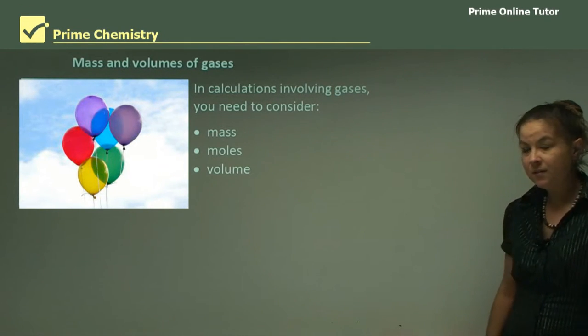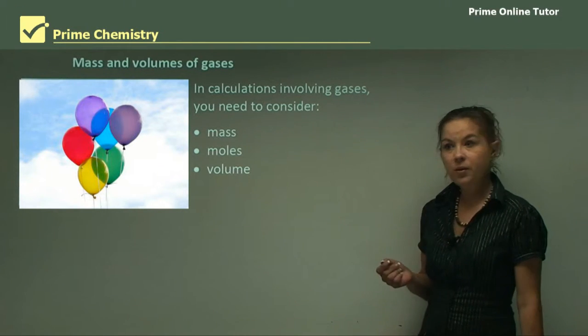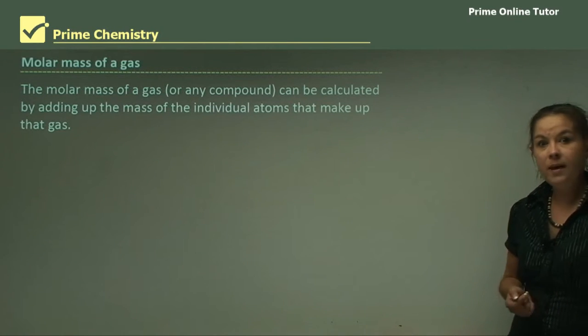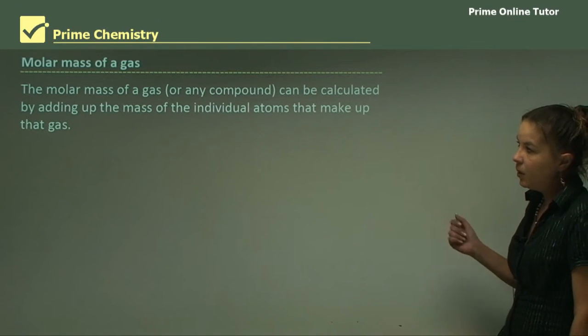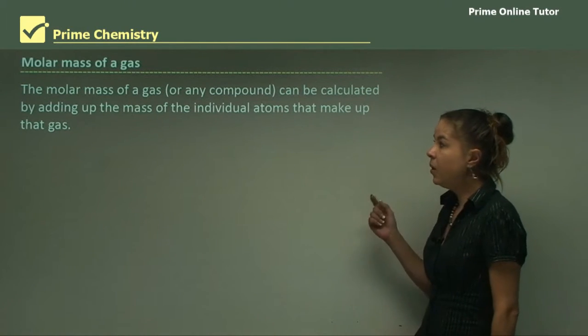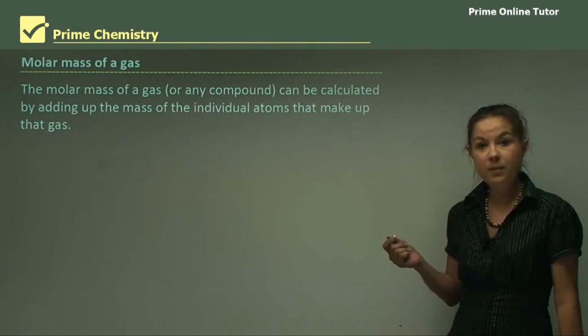The mass, the number of moles, and also the volume. So let's look at the molar mass of a gas. The molar mass, or any compound for that matter, can be calculated by adding up the masses of the individual atoms that make up this gas.